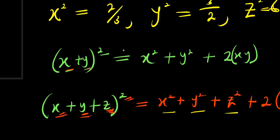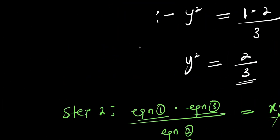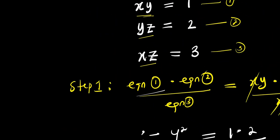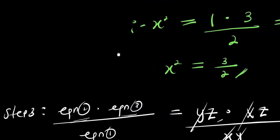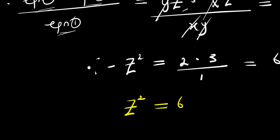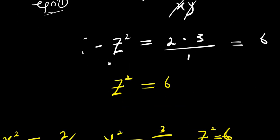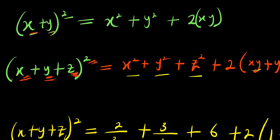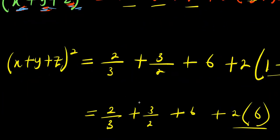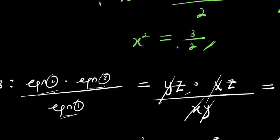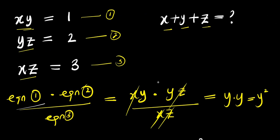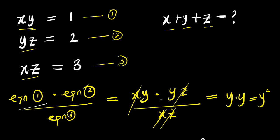So those are the two values for x plus y plus z. A quick recap: this is quite simple if you follow these steps. Step 1: multiply equation 1 times equation 2 divided by equation 3. Step 2: equation 1 times equation 3 divided by equation 2. Step 3: equation 2 times equation 3 divided by equation 1. Get the values for x squared, y squared, and z squared, then apply the identity for x plus y plus z squared equals x squared plus y squared plus z squared plus 2 times xy plus yz plus zx. Solve and take the square root. That is how you solve this interesting equation. Don't forget to subscribe and share this video. Thank you and see you again.